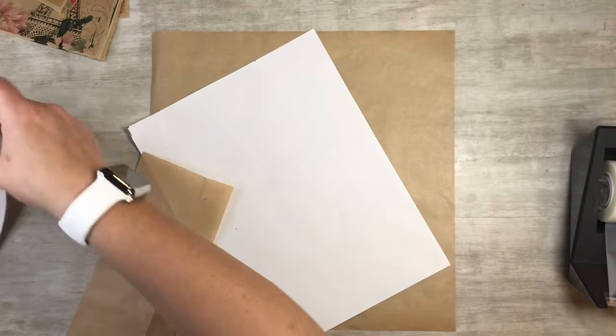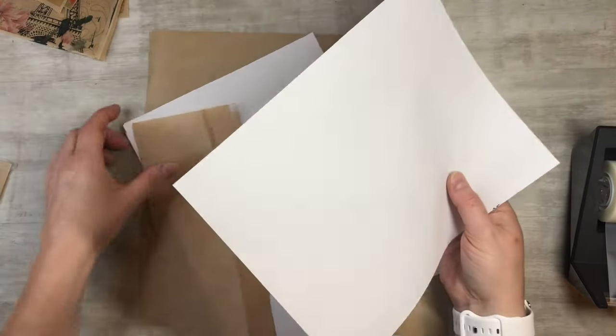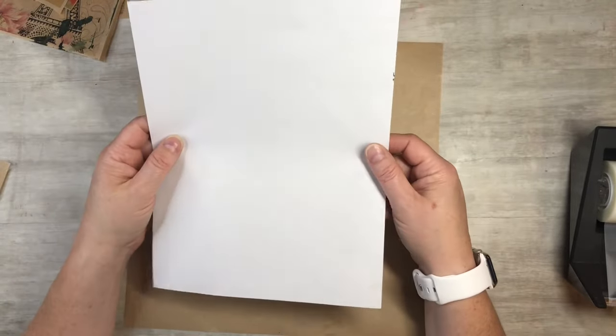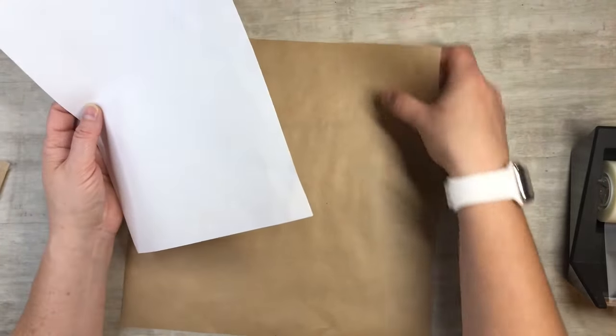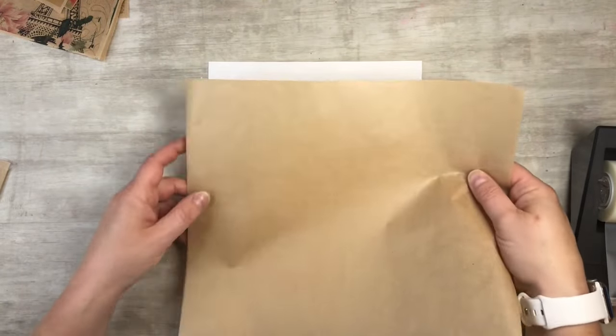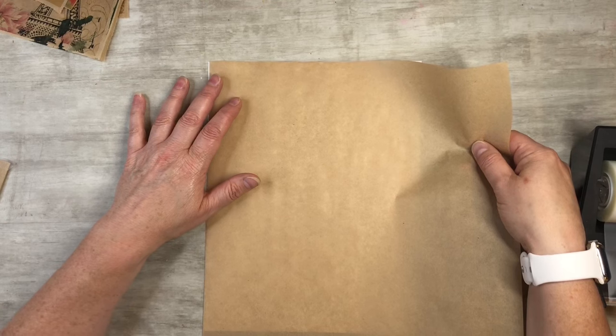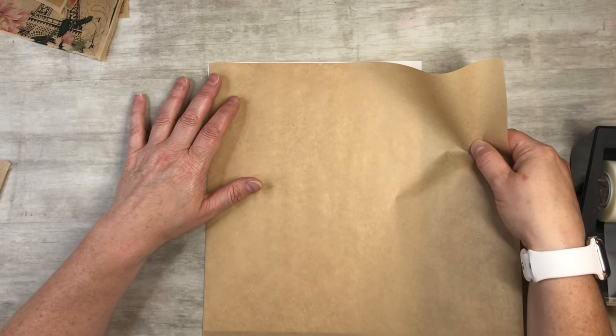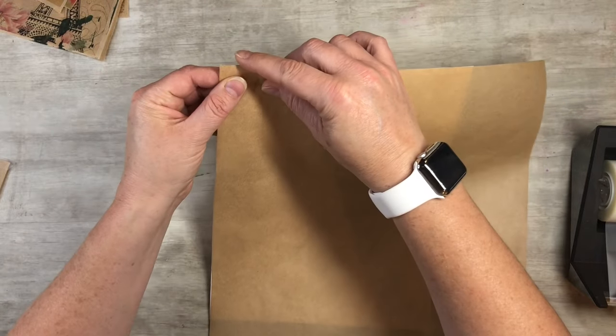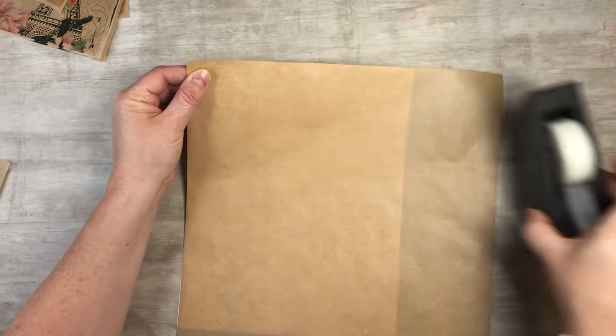So I got my paper, my deli paper, and then I just take just a copy paper here, just a regular standard copy weight paper that goes in your printer. And what I do is I line up the edge right here, just edge to edge like that.